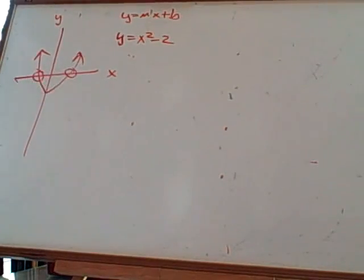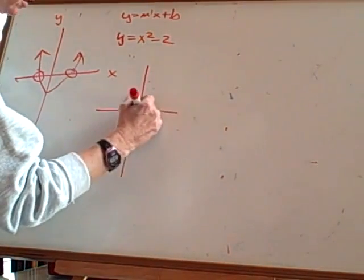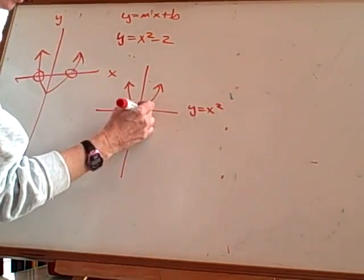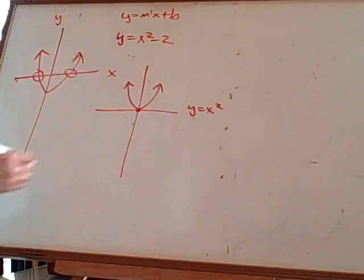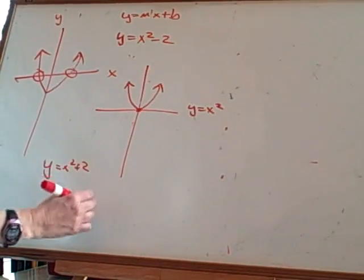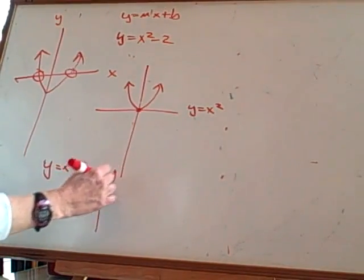It can cross the x-axis up to two times. It could cross it if it's just the y equal x squared one. It could cross it only once. And it could, if it was y equals x squared plus two, never cross it.